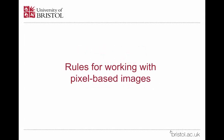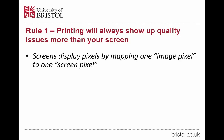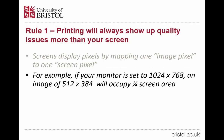When it comes to working with images, some simple rules of thumb and example calculations will help you make the right decisions about the images that you put into your poster. Rule 1: printing will always show up quality issues more than your screen will. Screens display pixels by mapping one image pixel to one screen pixel. For example, if your monitor is set to 1024x768, an image of 512x384 will occupy about a quarter of the screen area.